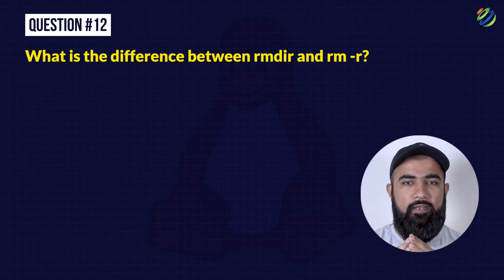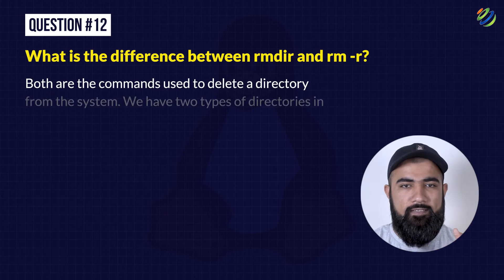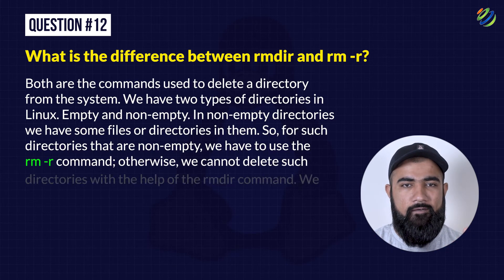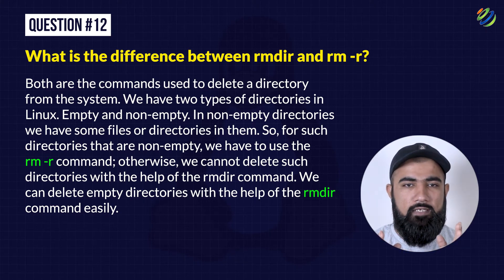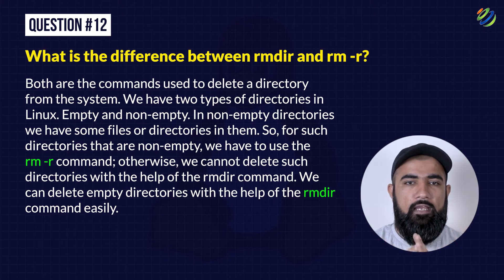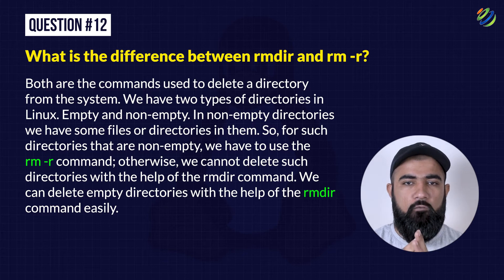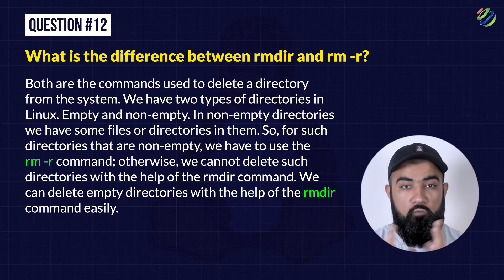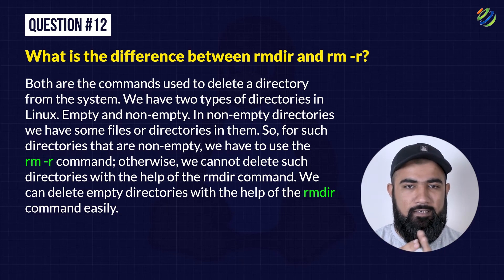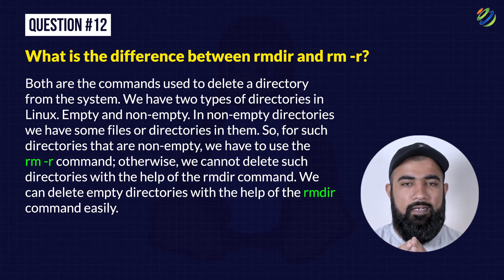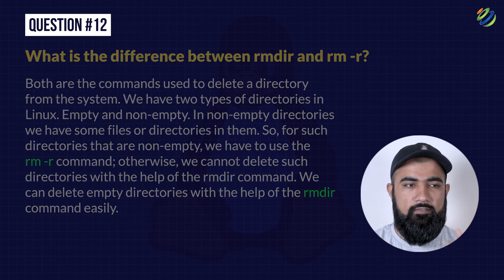Question 12: What is the main difference between RMDIR and 'rm -r'? Both are commands used to delete a directory from the system. We have two types of directories in Linux: empty ones and those which are not empty. For directories that are not empty — containing some files or directories — we have to use the 'rm -r' command. Otherwise, we cannot delete such directories with RMDIR. RMDIR is used only where we have empty directories.